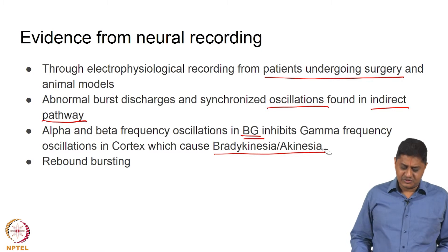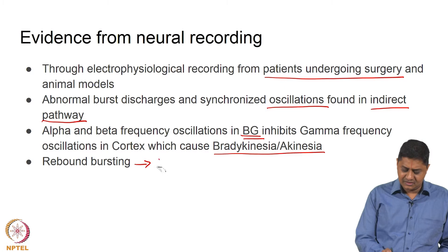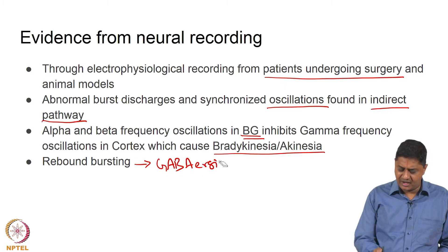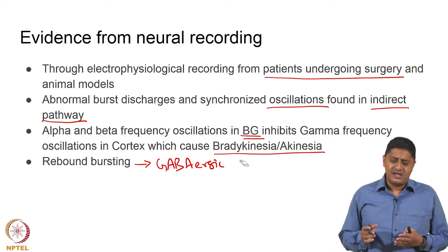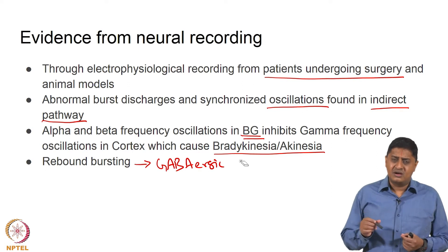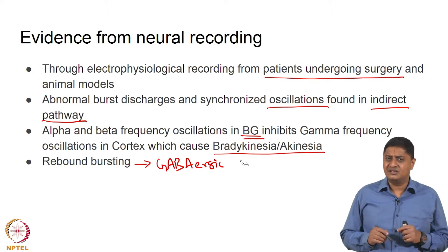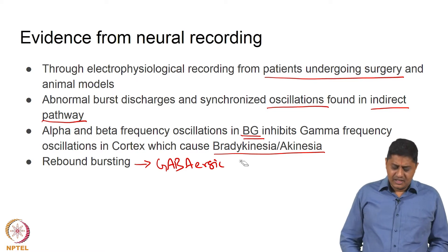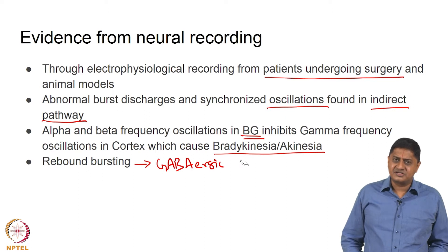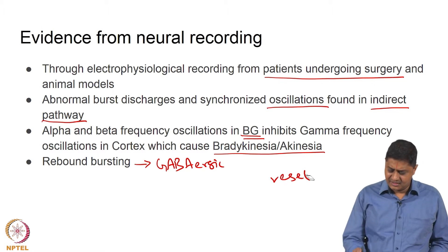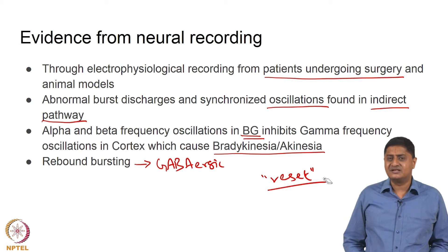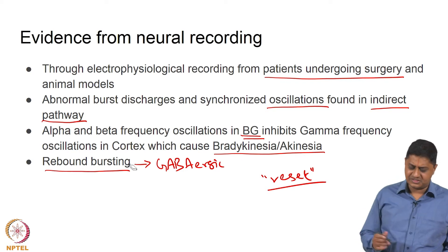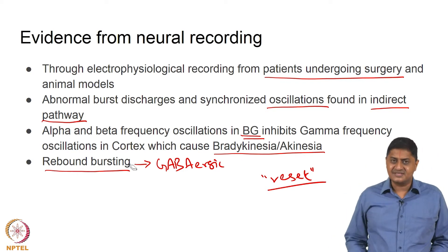It is this inhibition that causes bradykinesia — slowness — and akinesia — lack of movement. What is also believed to be true is the phenomenon of rebound bursting, caused due to extensive GABAergic activity within the basal ganglia. Most of the connections — medium spiny neurons, interneurons — are GABAergic, except neurons from the subthalamic nucleus which is glutamatergic. This interplay between GABAergic neurons causes a sort of reset that probably affects the motor circuit, and this phenomenon is called rebound bursting.